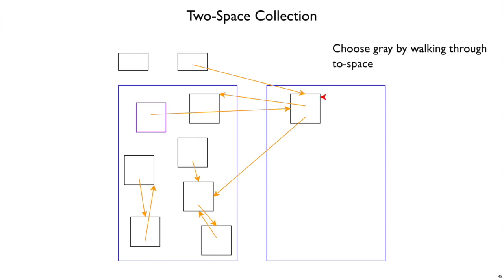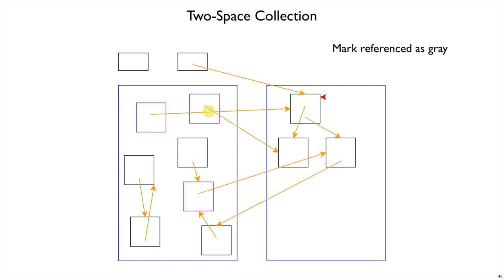We pick this gray object, follow its orange arrows, and see it has two orange arrows going into from-space. The things in from-space are still white objects, so we color them gray by copying them over — copy the first object over here, and the second object right next to it. These objects that were spread out in memory are now grouped together in to-space because we're allocating contiguously. The references got updated to refer to the objects' new locations in to-space, while the old locations now hold forwarding pointers to their new locations in case we need to find where an object moved.